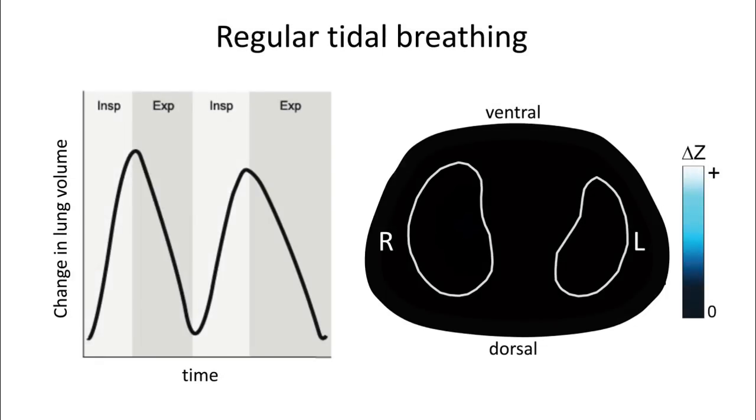The volume change during two consecutive breaths of regular quiet tidal breathing at approximately five minutes after birth can be seen in the left-hand panel. An increase in EIT signal represents increasing lung volume during inspiration and the subsequent decrease in signal the emptying of tidal volume from the lung during expiration. The slope of the volume curve represents relative gas flow within the lungs with a steeper curve indicating faster flow.